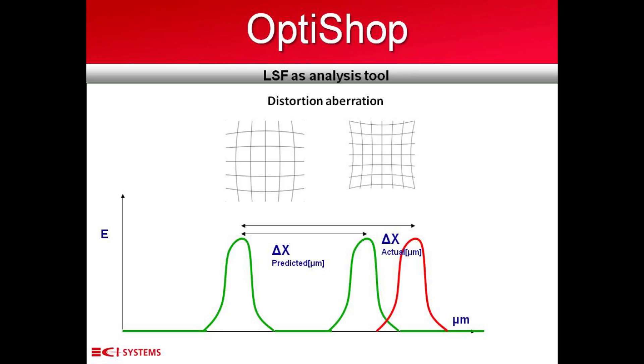While the MTF is used to evaluate the system performance, the LSF produced by the system is used to evaluate and identify the different optical aberrations which exist in the system. The next slides will demonstrate how to identify these optical aberrations. Distortion is measured by calculating the relation between the expected image position at off-axis measurement and the actual image position found during the scan. This is done using the automated scanners in the rotated stage.